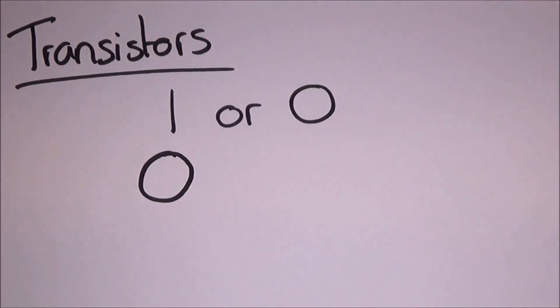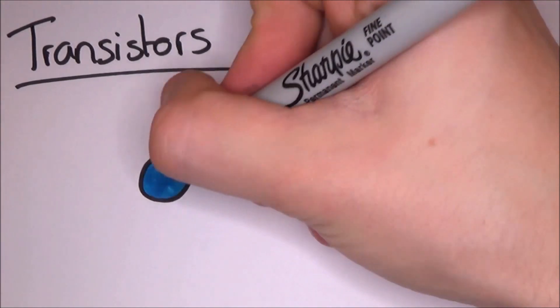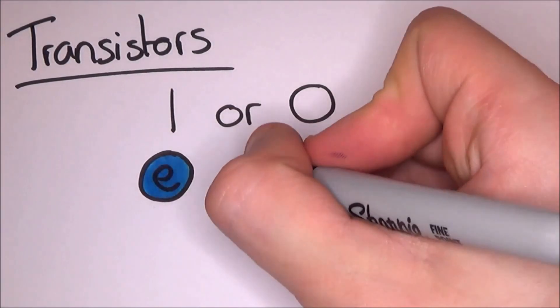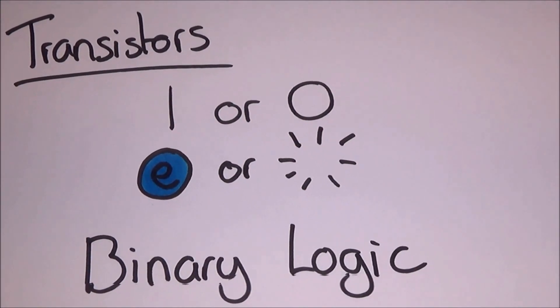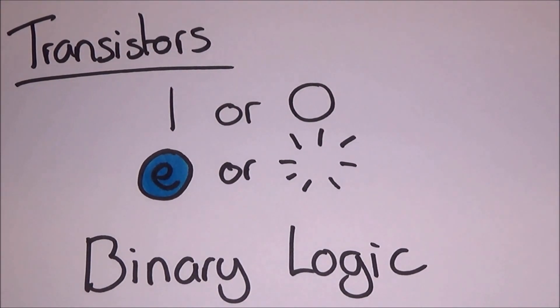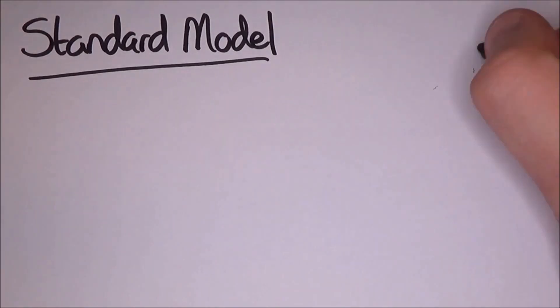If you remember back to the transistor video, computers are full of them and they are one or zero. Electrons are there or electrons aren't there. They're pretty simple stuff and they work in binary logic. But we have a few new ideas. Referencing another video, if you remember back to the standard model video where I explain the spin, this is going to help now.